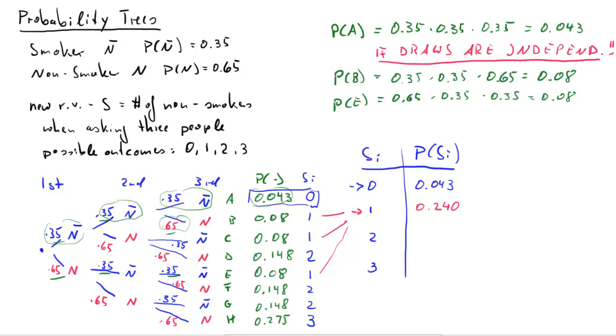Then, let me use a different color. Outcome two, so two non-smokers out of three. These three branches all added up, the probabilities lead to 0.444.